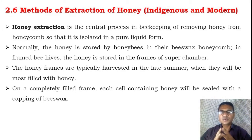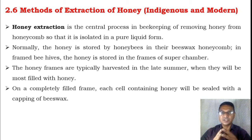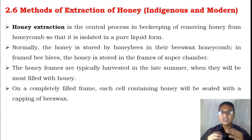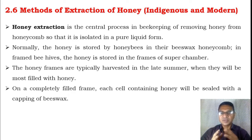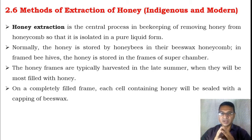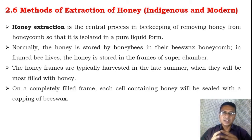Honey extraction is the central process in beekeeping, which removes honey from the honeycomb in pure liquid form. In the honeycomb, honey is stored in the honey region located just above the brood chamber. In wooden hives, just above the brood chamber, the super chamber is present where the honey is stored. Generally, honey is harvested in late summer when the super chamber is completely filled. The worker bees then seal it with beeswax, and that honey is considered pure honey.